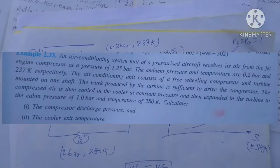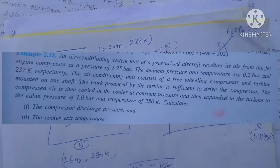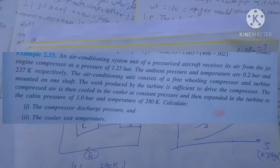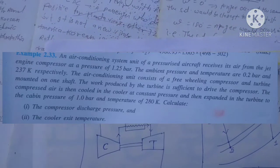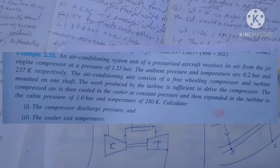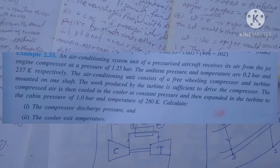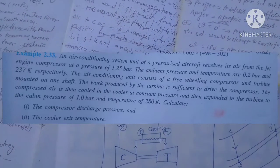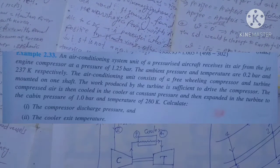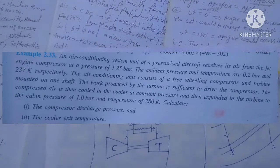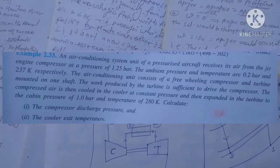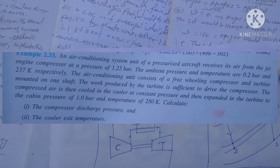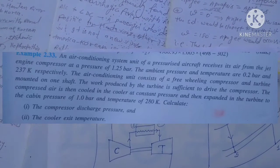Hi friends, another video on RAC topics. The question is: an air conditioning system unit of a compressorized aircraft receives its air from the jet engine compressor at a pressure of 1.25 bar. The ambient pressure and temperature are 0.2 bar and 237 Kelvin respectively.